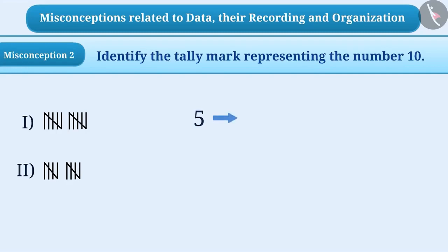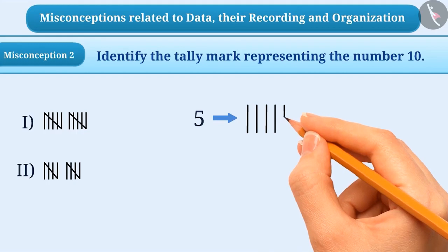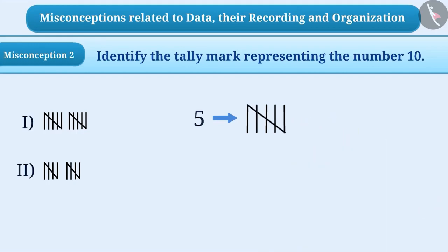A slanting line is drawn on four straight lines to represent the number 5 in the tally mark. But some children may not get the right way to express tally marks. They draw a slanting line on five straight lines to represent the number 5.